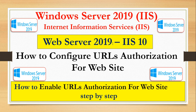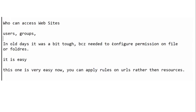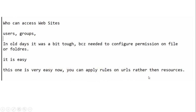We will understand a couple of things about it. Who can access websites — we can define who can access that website, either users or groups. We can assign permission to those users or groups; basically it is allow and deny. In older days it was a little tough because you needed to configure permissions on files or folders, but in this version of IIS it is very easy. You can apply rules on a URL rather than on the resources directly.